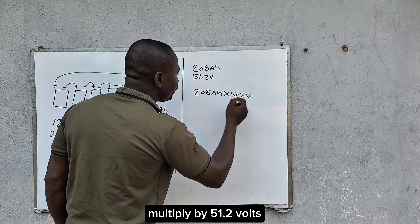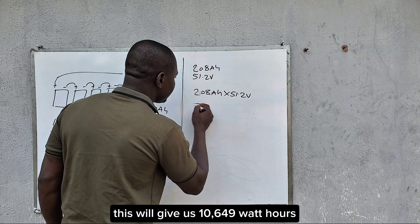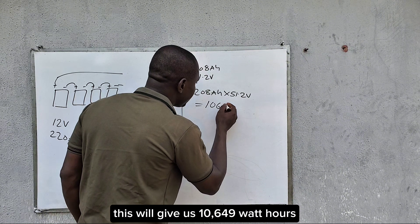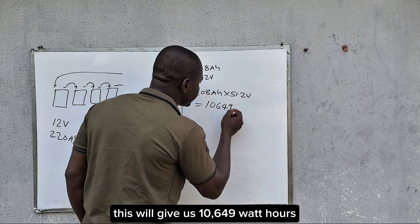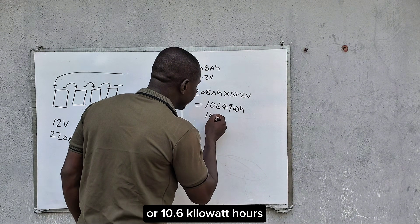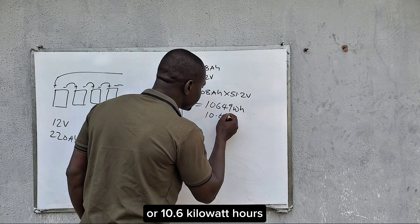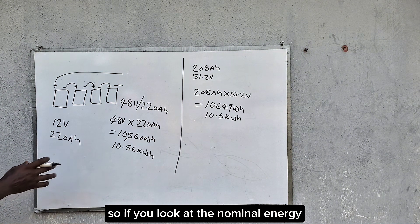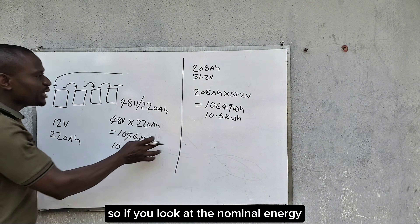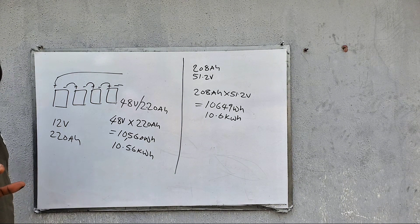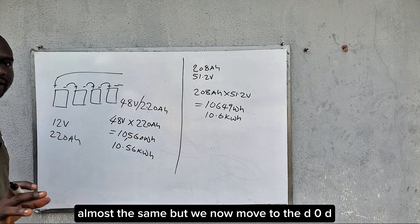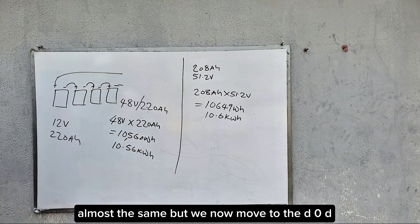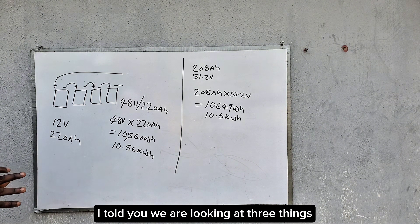For the lithium battery, the nominal energy is 208 amp hours multiplied by 51.2 volts, which gives us 10,649 watt hours or 10.6 kilowatt hours. So if you look at the nominal energy, it is almost the same. But now we move to the DoD.